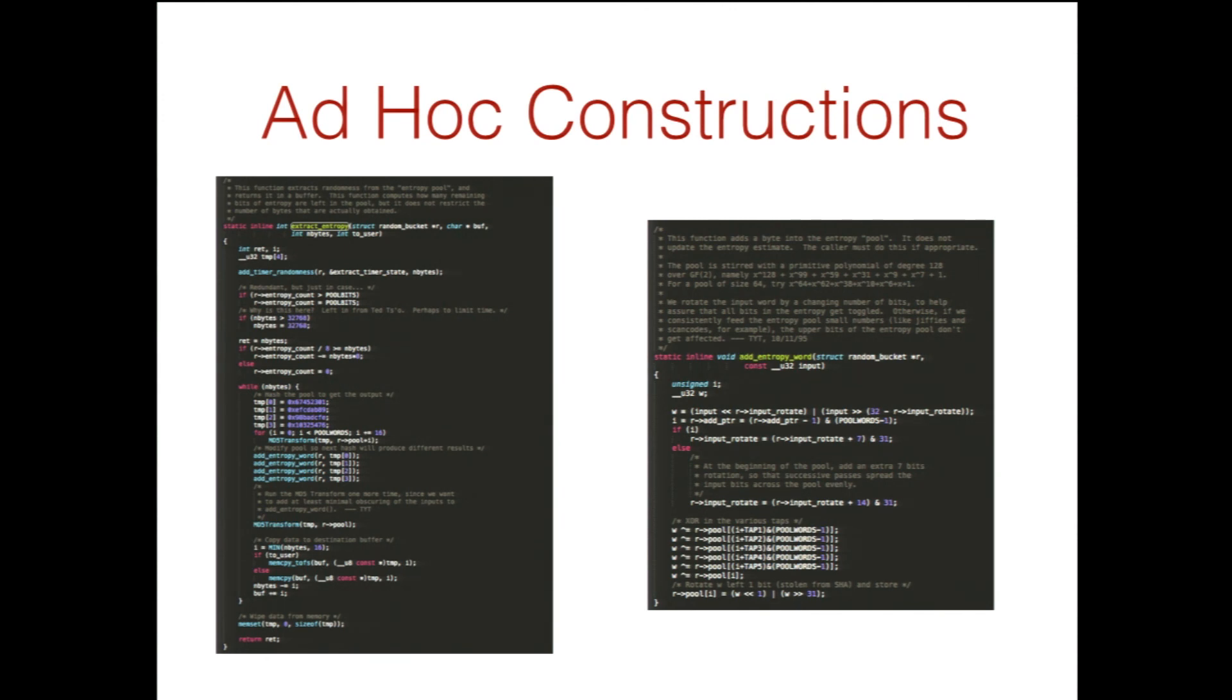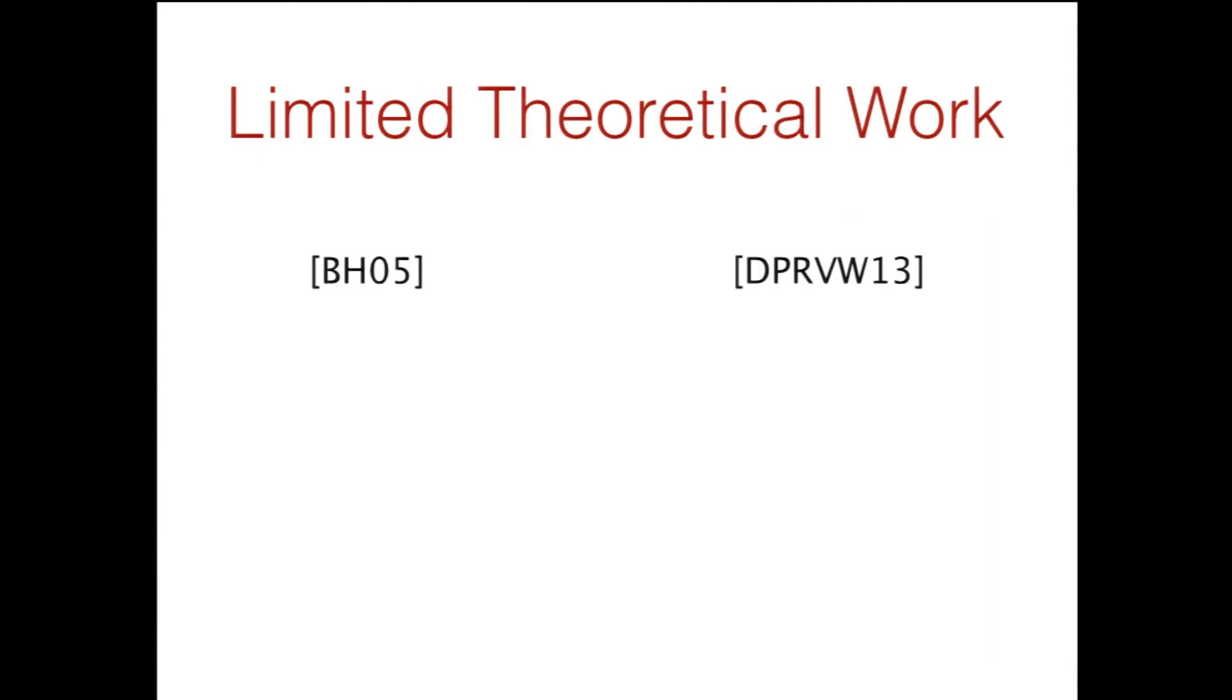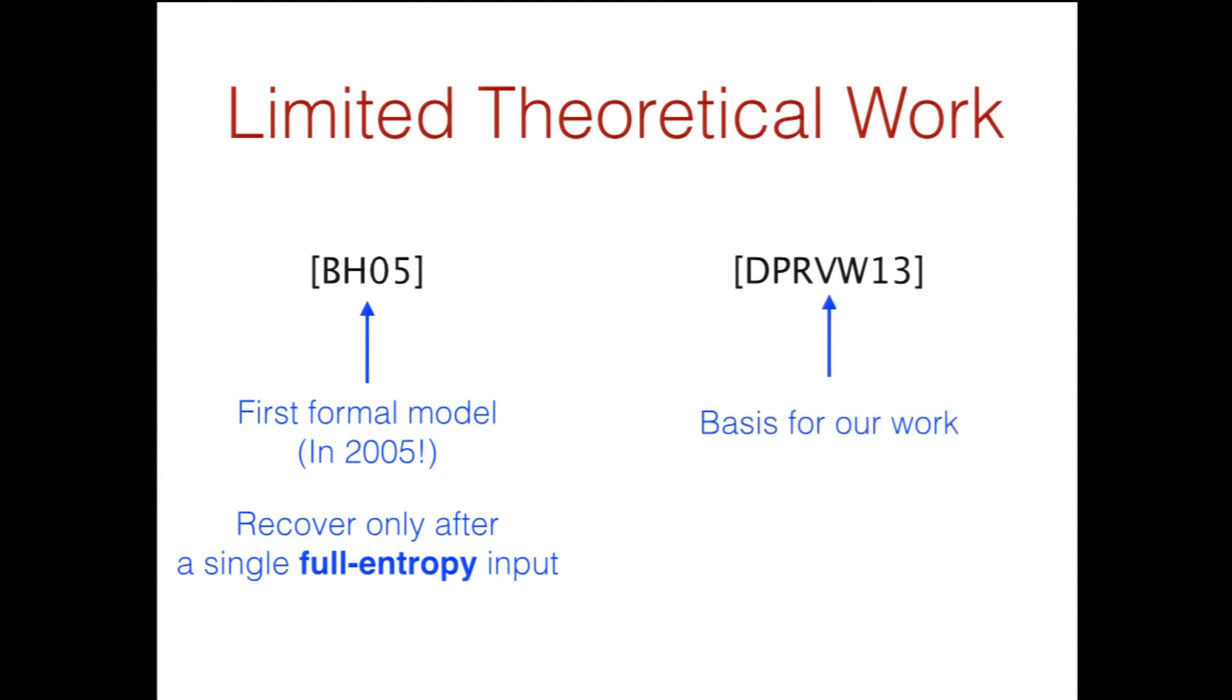So this is the basic object that we're studying. This is Linux's RNG with input. It's very complicated and ad hoc, but it's very poorly studied in theory. This study started not until 2005 by Barack and Halevy, and they provided a model, which was great, but it only recovered from compromise after receiving one full entropy input. So this isn't ideal because full entropy inputs are hard to find. The basis for our work will be Dotis et al., who solved this problem.